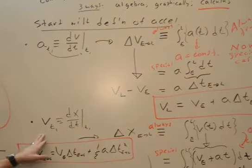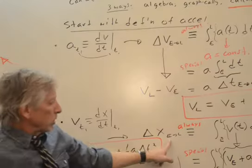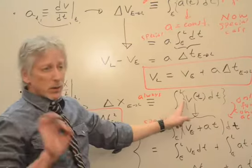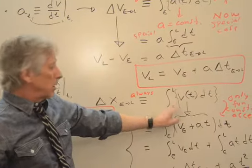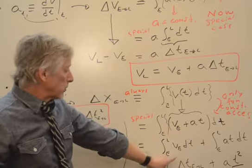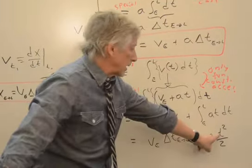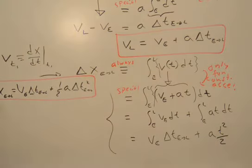I then go to the velocity definition as an integral. I take this and put it in for the velocity function, because now acceleration's constant. I'm restricting it. Put it there. It's a pretty easy integral, and you've got this. Again, that t then becomes a delta t, and you've got this.